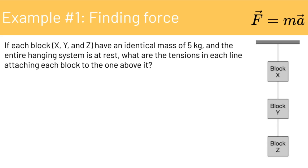Let's look at an example using F equals MA to find the force. We have a diagram of three blocks hanging from strings. Block X hangs from one string, block Y hangs from a string under block X, and block Z hangs from a string under block Y. Each block has an identical mass of 5 kilograms, and the entire hanging system is at rest. What are the tensions in each line attaching each block to the one above it?